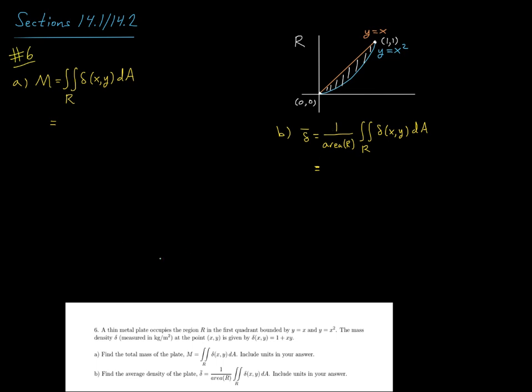The mass density delta measured in kilograms per square meter at the point xy is given by delta xy is 1 plus x times y. Part A says to find the total mass of the plate m, which is the double integral of our density function over the region R.